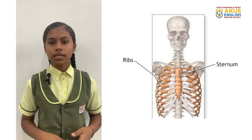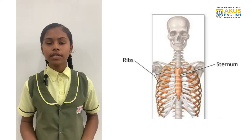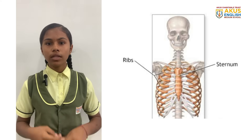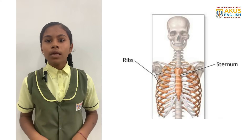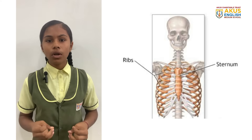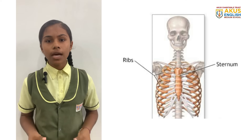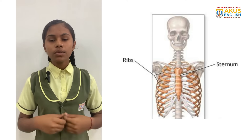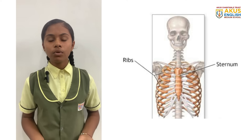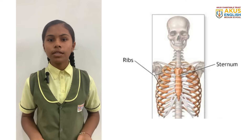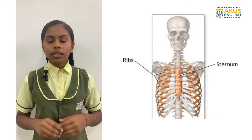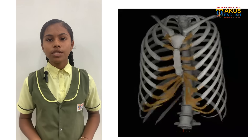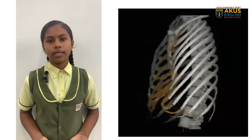The cage-like structure in the chest is called the ribcage. In the chest, there is one vertical flat bone called the sternum. Pairs of flat bones called ribs are joined to each side. These 25 bones form the ribcage. It is joined to the spine at the back.